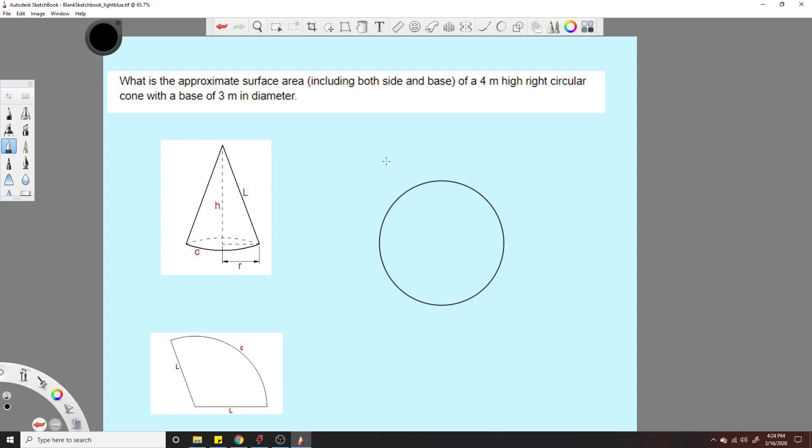To find the surface area of a four meter high circular cone with a base of three meters in diameter. So to find this surface area we're gonna have to find the area of the lateral section of the cone and the base section of the cone.